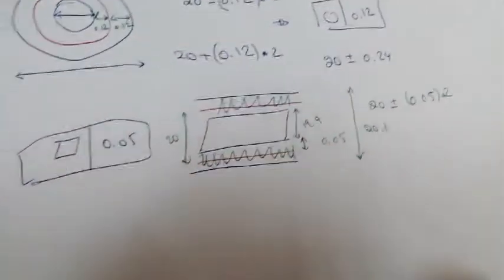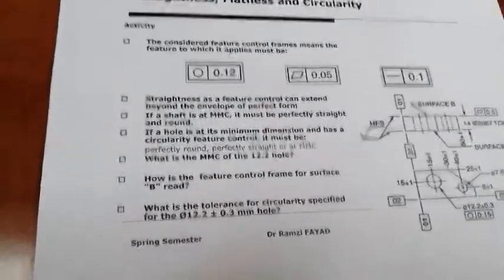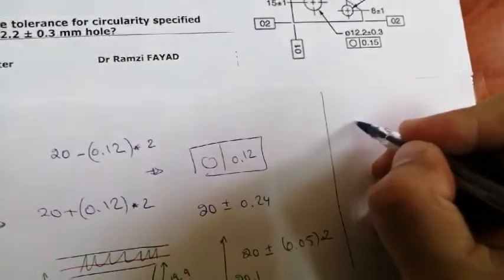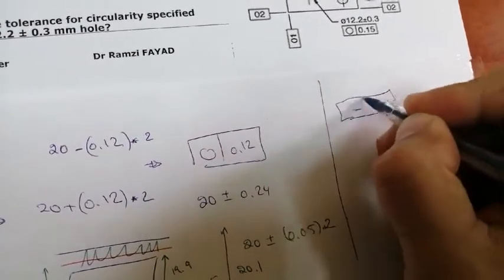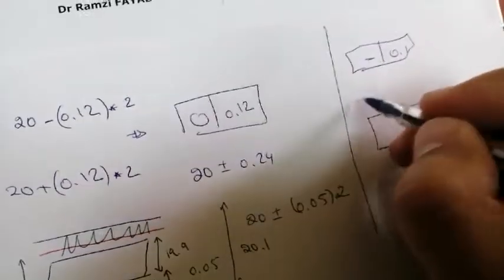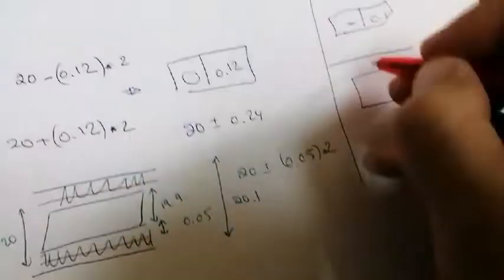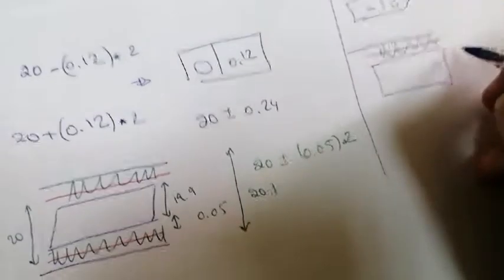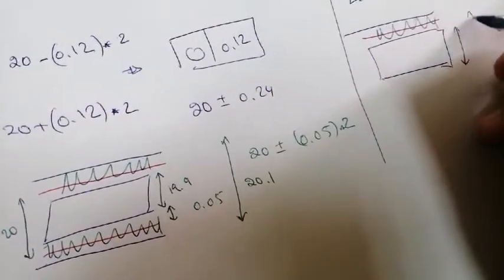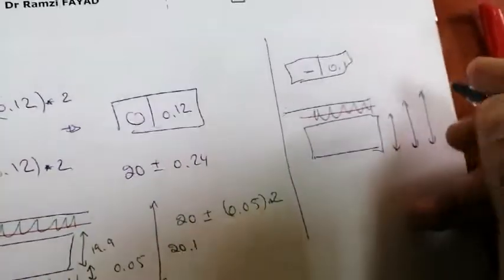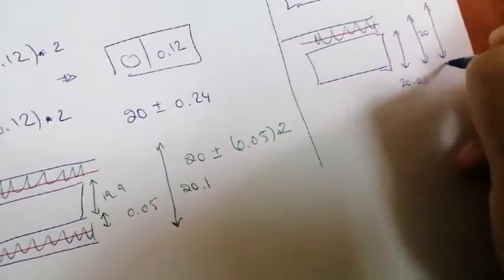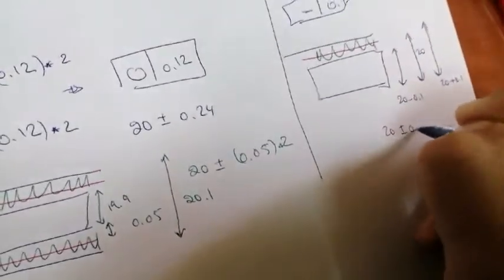The last one is straightness with a value of 0.01. It is a straight line and the one in the middle. If the nominal is 20, then since it is three-dimensional, the red line is 20, the smallest is 20 minus 0.1, and the largest is 20 plus 0.1 — so 20 plus or minus 0.1.